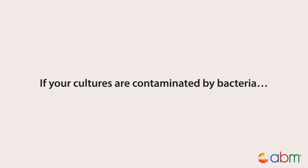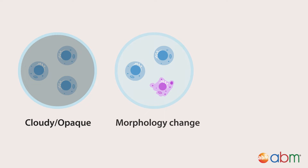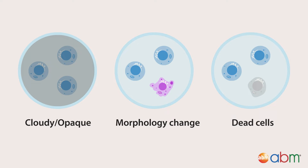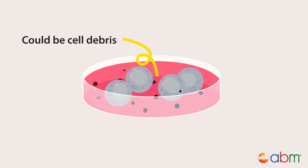If your cultures are contaminated by bacteria, you'll notice a cloudy appearance, cell morphology changes, and the detachment or death of cells. Sometimes, dark spots may appear which can indicate contamination, but it could also just be debris from the cells.